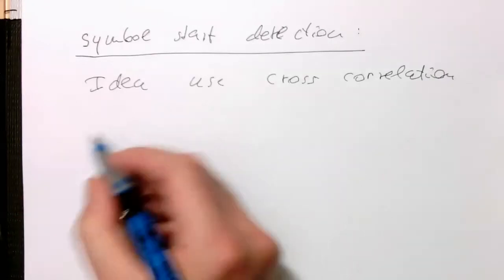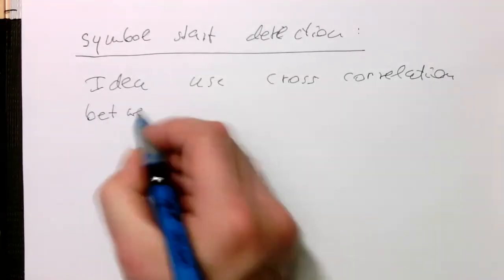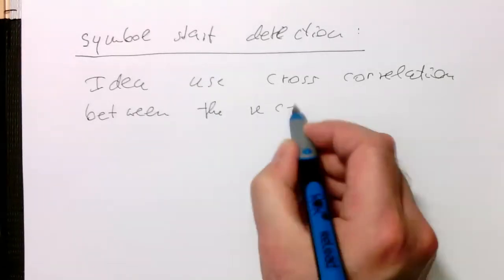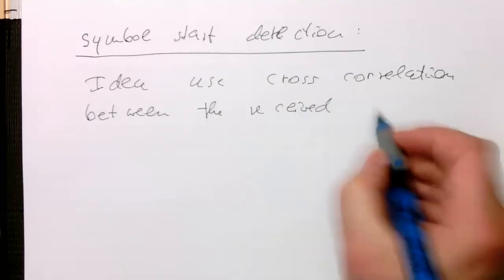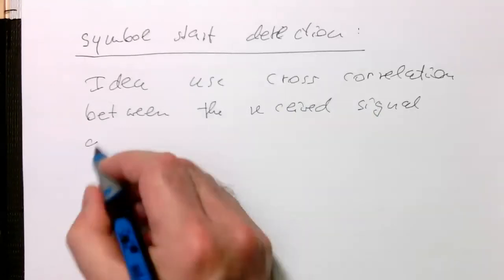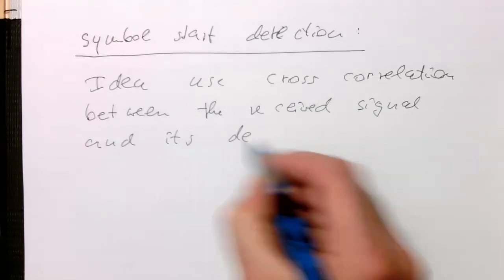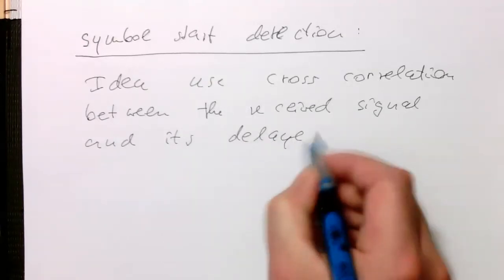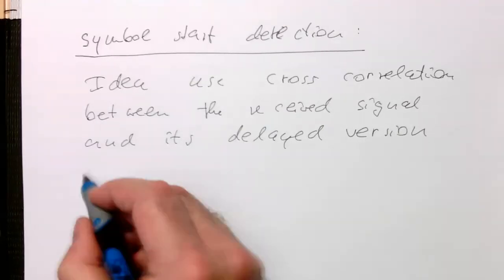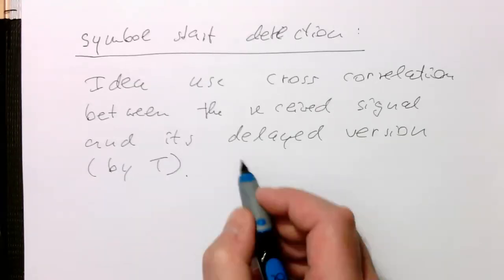Use cross-correlation between the received signal and its delayed, delayed version. Delayed by T, by the symbol duration. So that's the idea.